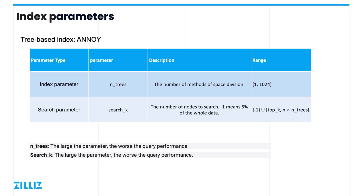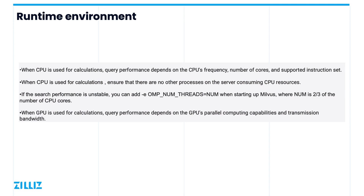After talking about the effect of different index parameters on Milvus performance, we found that query performance and recall are always inversely related — the better the performance, the lower the recall. So we need to find the optimal performance by adjusting parameters to ensure an equal balance. The hardware resources and system environment play a big role in search performance. When searching with a CPU, query performance depends on the CPU's frequency, number of cores, and instruction set supported. The higher the frequency and the more cores, the better the performance. Milvus has better query performance when running on a CPU that also supports the AVX instruction set. When using CPU queries, make sure there are no processes on the server taking up CPU resources. If too many resources are taken up by other processes, Milvus's query performance will be affected. If the query performance is not stable, you can add the parameter OMP_NUM_THREADS equal to two-thirds of the number of CPU cores when starting Milvus with Docker.